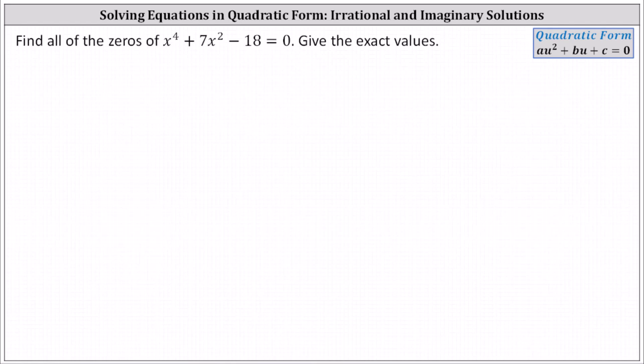We're asked to find all the zeros of x to the fourth plus seven x squared minus 18 equals zero and give the exact values.